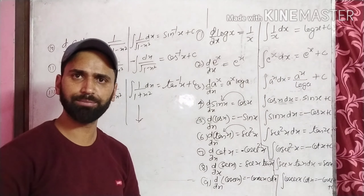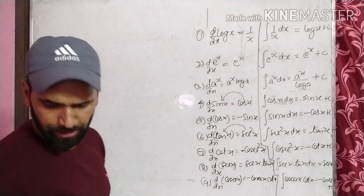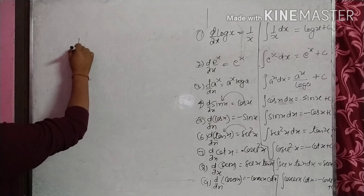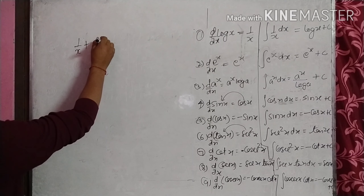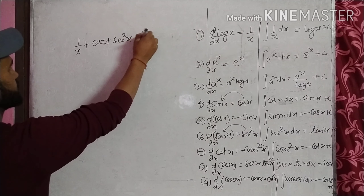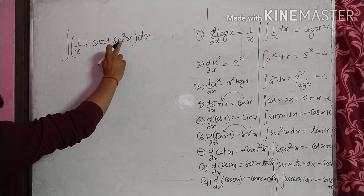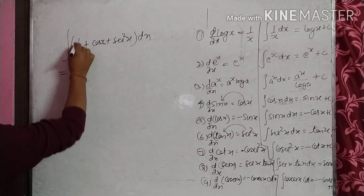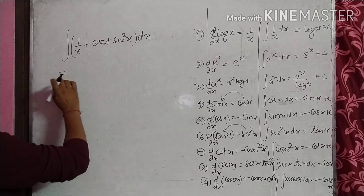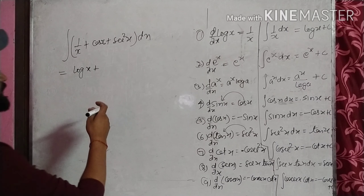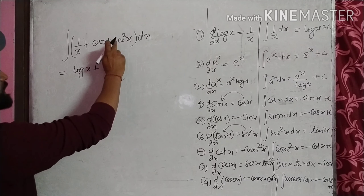तो अब इन formulas के basis पर कुछ questions करते हैं। मान लो आपके पास question है: ∫(1/x + cos x + sec²x) dx। इसका integration ऐसे होगा: 1/x की integration log x है, cos x की integration sin x है, और secant square x की integration tangent x है। So the answer is log x + sin x + tan x plus c।